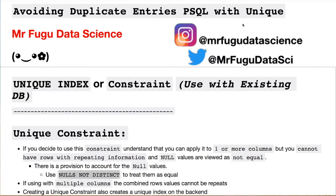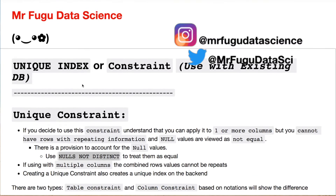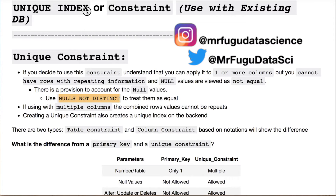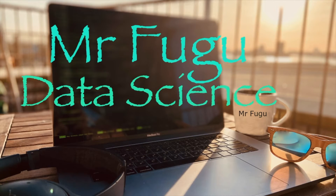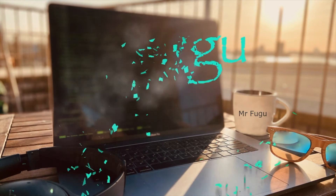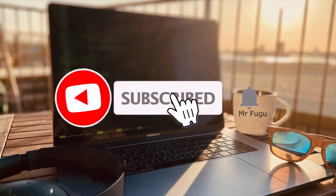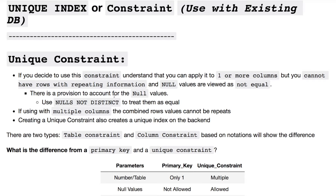Welcome everybody. You're watching Mr. Fugu Data Science. Today we're going to deal with the unique constraint and indexes. Feel free as always to hit me up on my socials if you need any help or have any suggestions. This is going to deal with unique index and constraint for existing databases — that's an important distinction: existing databases.